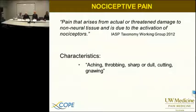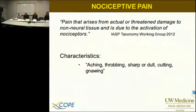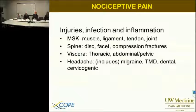By way of diagnosis, it's very helpful to describe nociceptive pain if it is present. Nociceptive pain arises from actual or threatened damage — so we don't even have to have damage, but the threat of damage can trigger nociceptive pain to non-neural tissue. It's due to the activation of nociceptors, the free nerve endings that introduce the noxious protective damage-danger signal into the central nervous system. It's characteristically aching, throbbing, dull, sharp, cutting, or gnawing. It's associated with injuries, infection, and inflammation — musculoskeletal, spine, visceral, and headache including migraine.